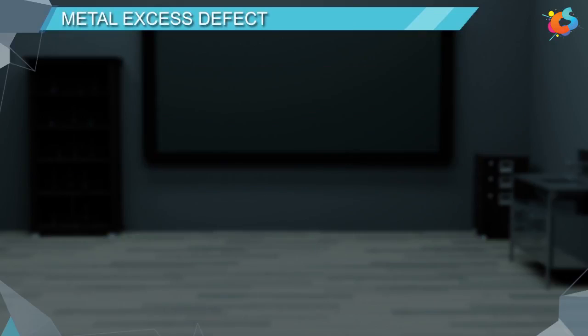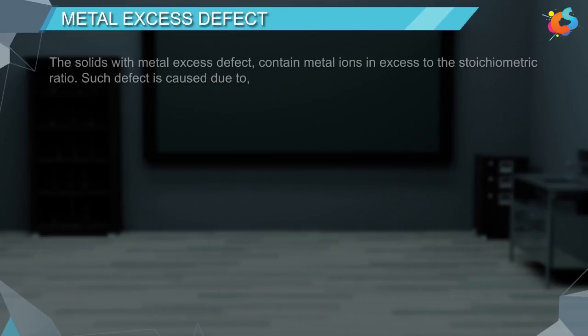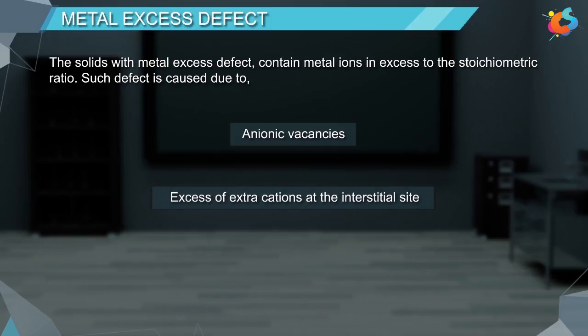Metal excess defect. The solids with metal excess defect contain metal ions in excess to the stoichiometric ratio. Such defect is caused due to anionic vacancies or excess of extra cations at the interstitial site.